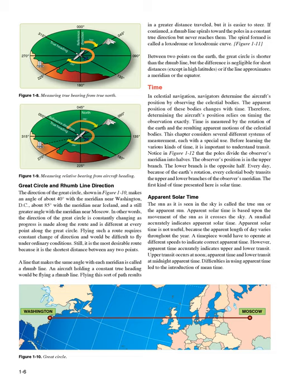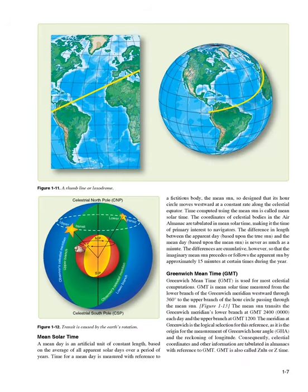Difficulties in using apparent time led to the introduction of mean time. A mean day is an artificial unit of constant length, based on the average of all apparent solar days over a period of years. Time for a mean day is measured with reference to a fictitious body, the mean sun, designed so its hour circle moves westward at a constant rate along the celestial equator. Time computed using the mean sun is called mean solar time. The coordinates of celestial bodies in the air almanac are tabulated in mean solar time. The difference in length between the apparent day and the mean day is never as much as a minute, though differences are cumulative, so the mean sun may precede or follow the apparent sun by approximately 15 minutes at certain times during the year.